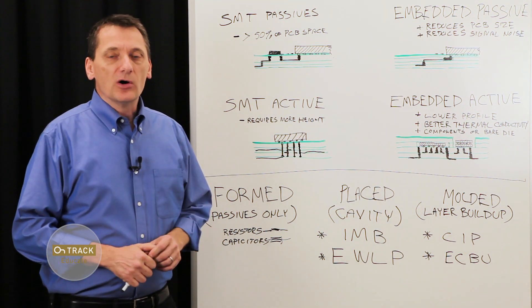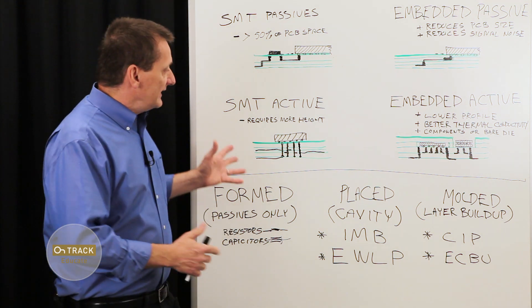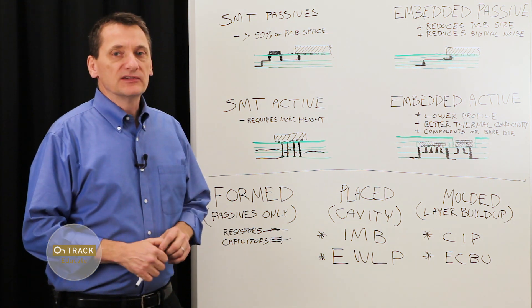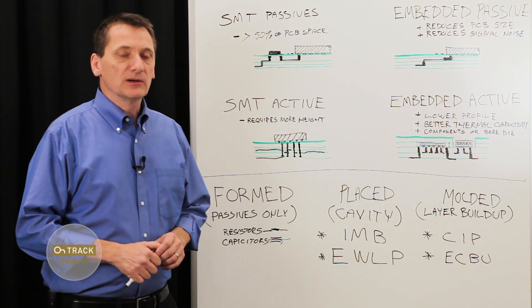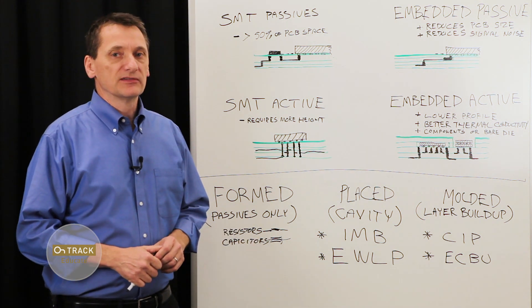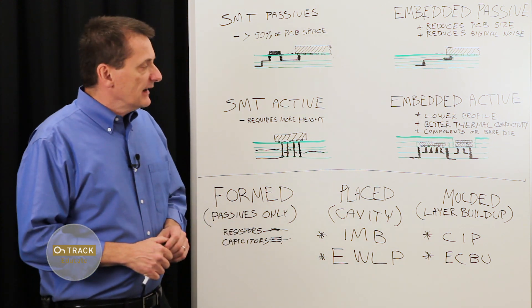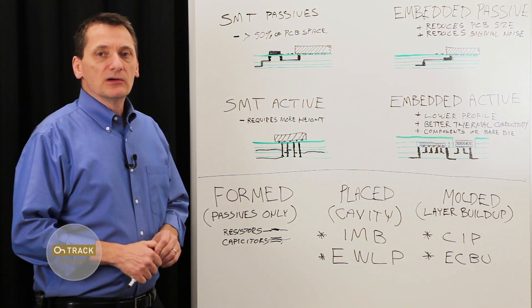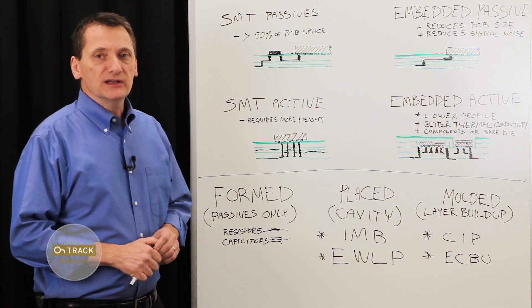Likewise, cost will be a factor as well. In general, these techniques do raise the price of fabricating a board. However, in large volumes, embedded components could actually reduce the overall assembly cost. So there can be a net gain based on volume. Again, speak with your fabricator about which techniques are most applicable for what you need.